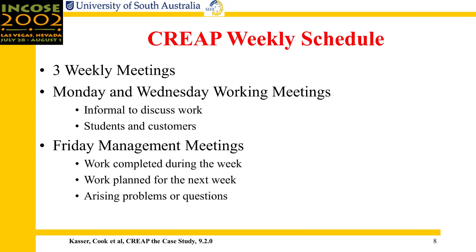The weekly schedule included three meetings. The students would be working full time on the project. We would get together Mondays and Wednesdays to have working meetings — a chance for the students to discuss what they'd done with the customers, namely myself and Stephen Cook, and to discuss how to do the work and some of the problems with management, namely Stephen Cook and myself. On Fridays, we would have weekly management meetings that covered work completed during the week, work planned for the next week, and arising problems or questions. And every now and again, according to the schedule, there would be a milestone review.